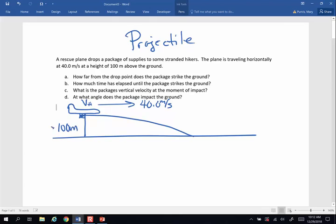The airplane is 100 meters above the ground. That is my Y, my vertical displacement, and I want to know how far from the drop point does the package strike the ground, and that is my X.